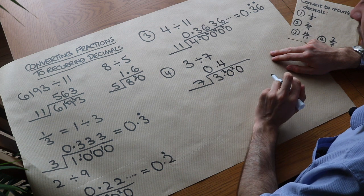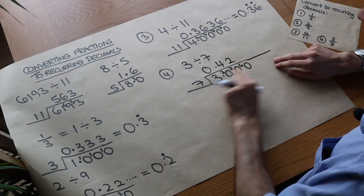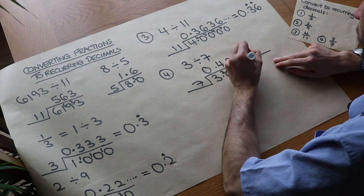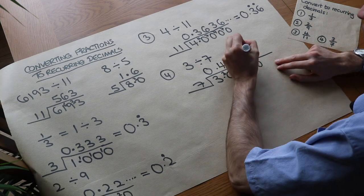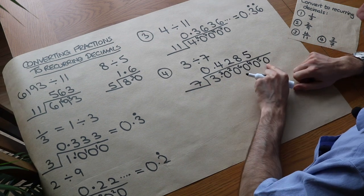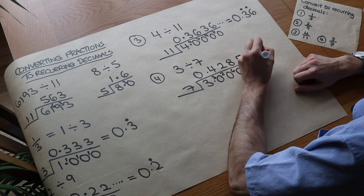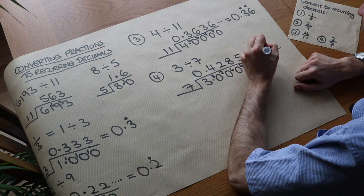How many times does 7 go into 20? Twice remainder 6. How many times does 7 go into 60? It goes in 8 times remainder 4. How many times does 7 go into 40? It goes in 5 times remainder 5. This is going on, isn't it? 7 into 50, that goes in 7 times remainder 1.